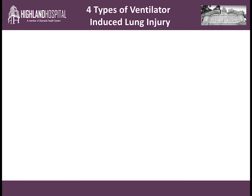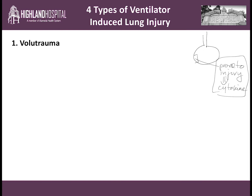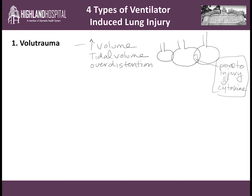Four types of ventilator-induced lung injury. The alveolar epithelial cell is very prone to injury, and the most important thing to know is that this is a cytokine-mediated injury. There are four things we do based on our settings on the mechanical ventilator that can further worsen this injury. Number one: volutrauma — too much volume. This is adjusted by the tidal volumes and leads to over-distention of your alveoli. We want to keep tidal volumes less than or equal to 6 to 8 cc's per kg of ideal body weight in all patients.